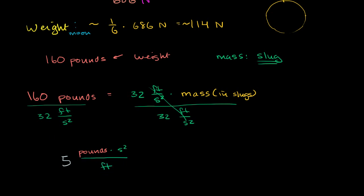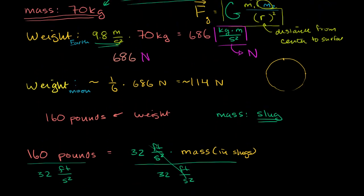And then I'm dividing by feet per second squared. That's the same thing as multiplying by second squared per feet. And these units, 5 pounds second squared over feet, this is the same thing as a slug. So if I weigh 160 pounds, my mass is going to be equal to 5 slugs. If my mass is 70 kilograms, my weight is 686 newtons. So hopefully that clarifies things a little bit.